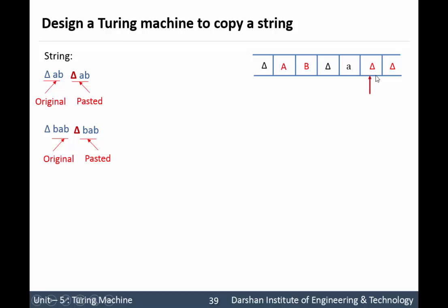Move to the right direction and instead of delta paste your small 'b'. Again move to the left direction until you find the first capital symbol. Now if we move one step to the right direction there is no small 'a' or 'b', that means our string is over. So we will convert our original string from capital to small letters. 'B' is replaced by small 'b' and capital 'A' is replaced by small 'a'. So finally we have 'ab delta ab' onto the tape.